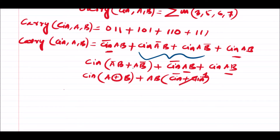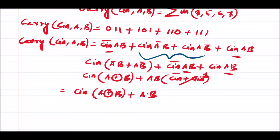This reduces to: Cin·(A XOR B) + A·B. This is our modified carry equation which we are going to use for the design of the full adder using two half adders.